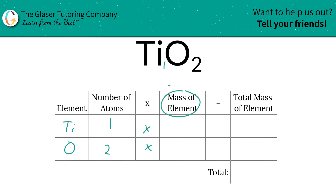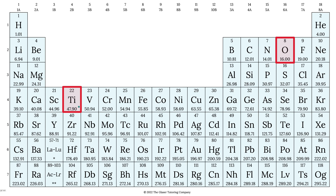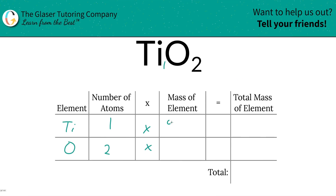Then we're simply going to multiply those number of atoms by the mass of each element. These masses are always found in the periodic table. 47.90 for titanium, oxygen is 16. So let's write that in: 47.90 for titanium, oxygen is 16.